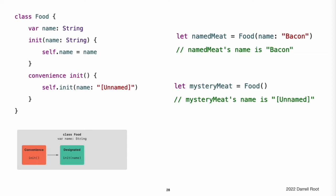Designated and convenience initializers in action. This example shows designated initializers, convenience initializers, and automatic initializer inheritance in action. This example defines a hierarchy of three classes called Food, RecipeIngredient, and ShoppingListItem and demonstrates how their initializers interact. The base class in the hierarchy is called Food, which is a simple class to encapsulate the name of a foodstuff. The Food class introduces a single String property called name and provides two initializers for creating Food instances.